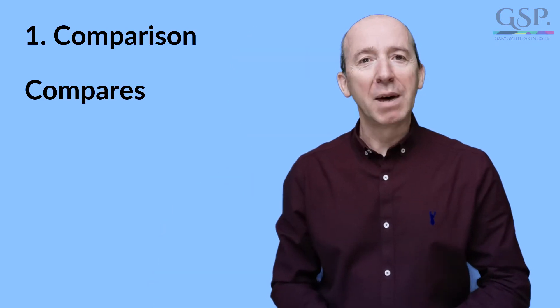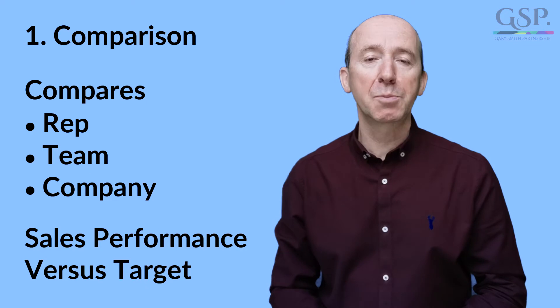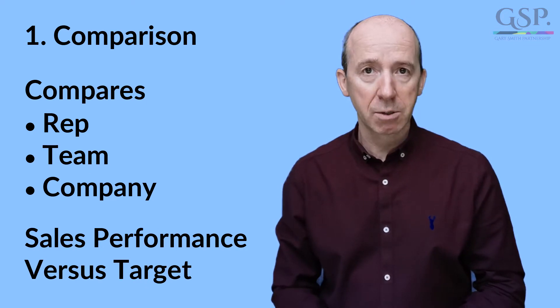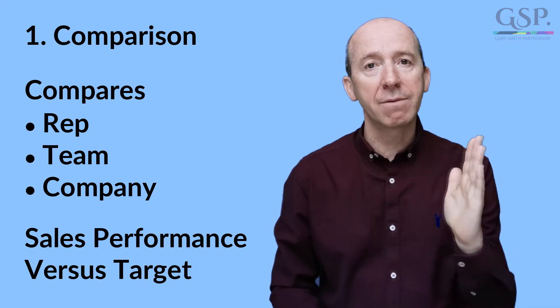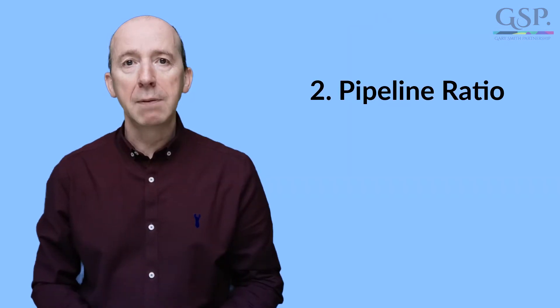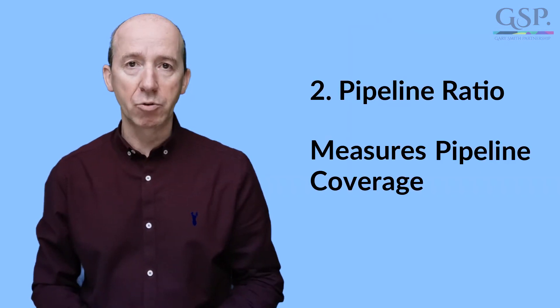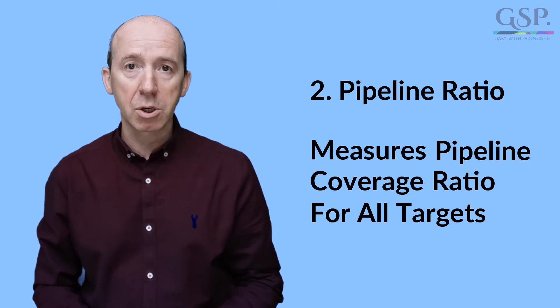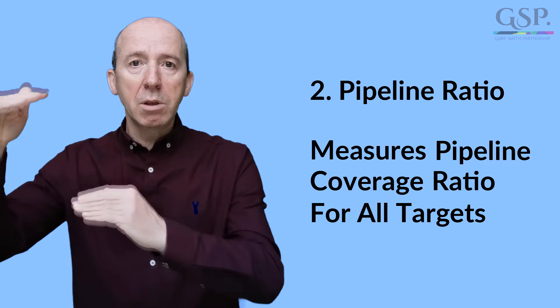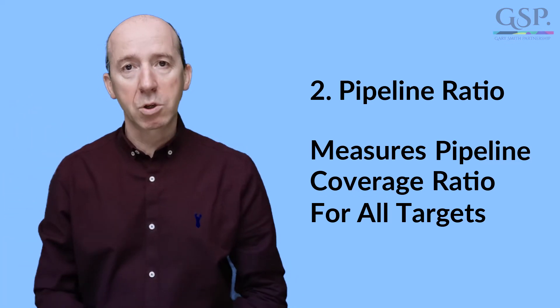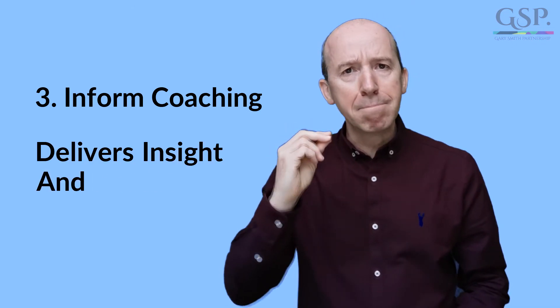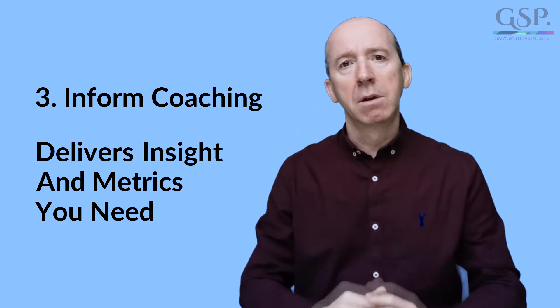Here are the key things you need to know about the GSP Target Tracker. First, it compares rep, team, and company sales performance versus targets — it tracks how you have performed. Second, it measures the pipeline coverage ratio for current and future targets, meaning it's forward looking and tells you whether the funnel is big enough to meet your sales quota. Third, it delivers the insight and metrics you need to coach the team and conduct meaningful pipeline reviews.